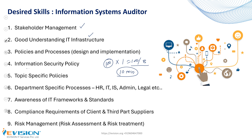You should have a good understanding of information security policy and topic-specific policies — for example, backup, email, password, or access control. There are various policies, as well as department-specific processes like HR, IT, and information security. Awareness of IT infrastructure standards like ITIL, SIAM — service integration and management — COBIT, and ISO 27001 is important. Compliance requirements such as SLAs and contractual requirements also apply. You should have a good understanding of the risk management process, including risk assessment and risk treatment.